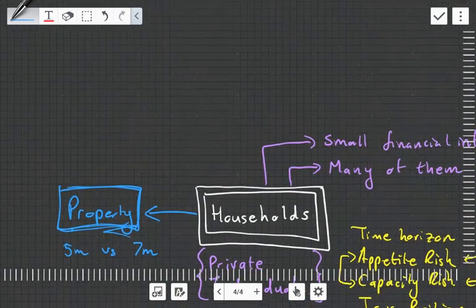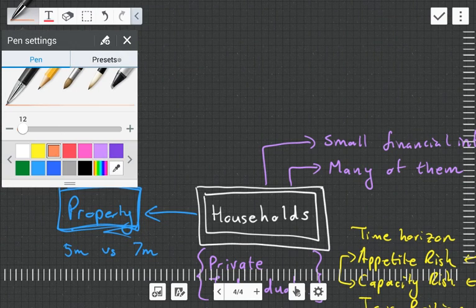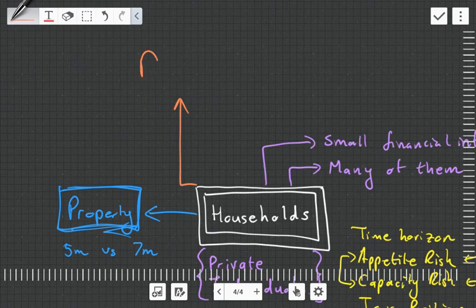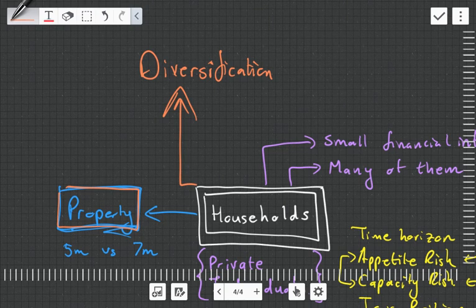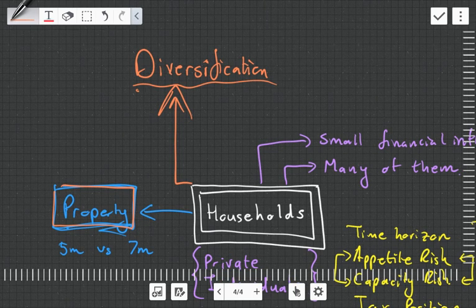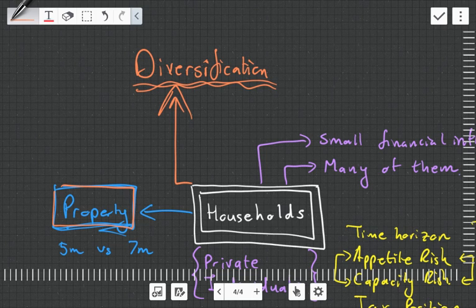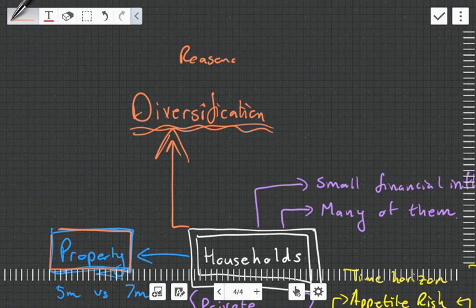A lot of people have a large proportion of their wealth in their own property. Some people will have a 5 million rand house and their total wealth will be 7 million. That means a large proportion is in property, which means if property prices go down, they lose a lot of their wealth. Also, property is not very liquid, so if there is a problem, they're in a sticky situation.